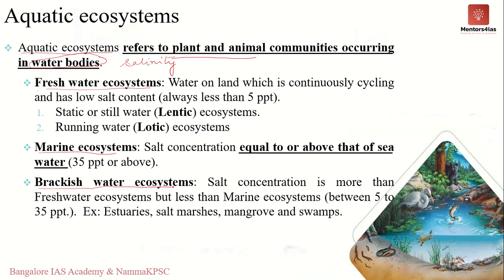The first type is freshwater ecosystems. Due to continuous cycling, freshwater ecosystems have low salinity — less than five parts per thousand. Freshwater ecosystems can be further classified into lotic ecosystems, which is moving water such as rivers and streams, and lentic ecosystems, which is stagnant water such as lakes and ponds.